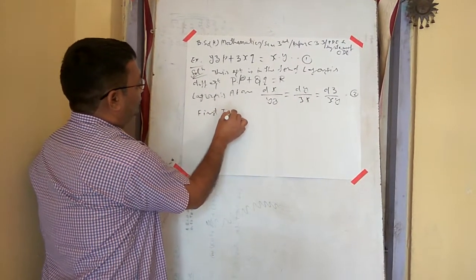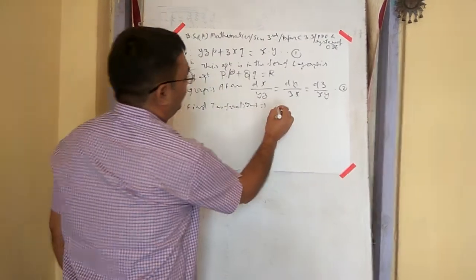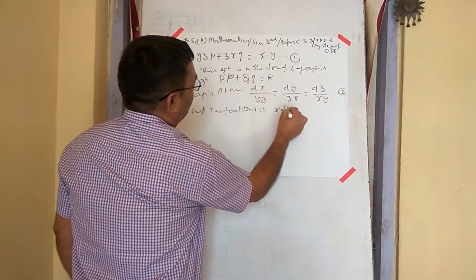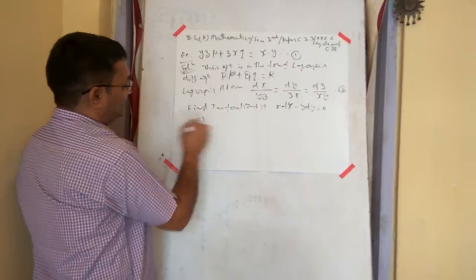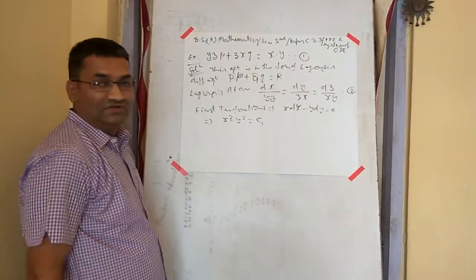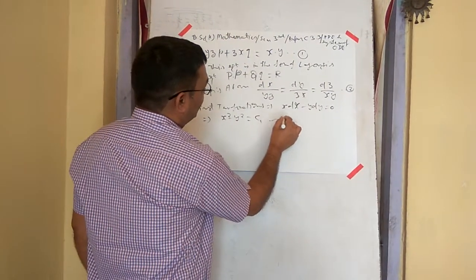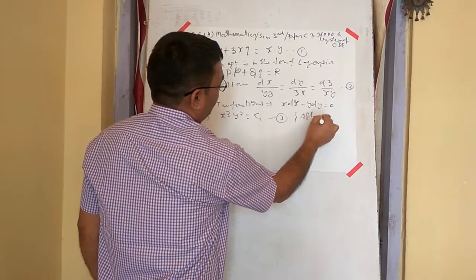First two fractions imply that X DX minus Y DY is equal to 0. Which on integration gives X square minus Y square is equal to C1, where C1 is a constant of integration. After integrations.